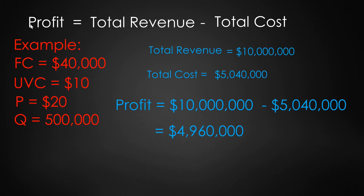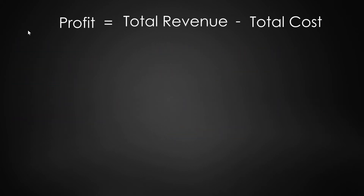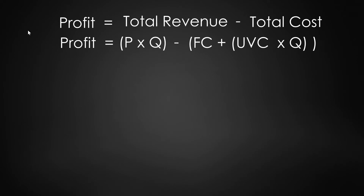If you followed along, you'll realize there are many different ways of arriving at the same answer. Let's look at a few different formulas for calculating profit — each gives the same answer, but depending on what information you have, you might prefer one over the other. The first is profit equals total revenue minus total cost. Another way is profit equals P times Q minus (FC plus UVC times Q).